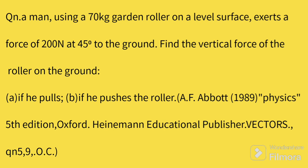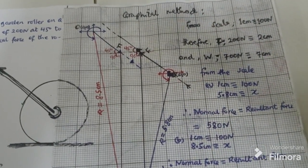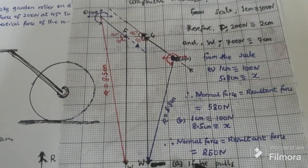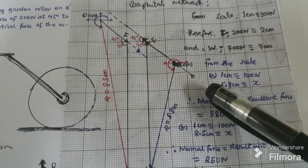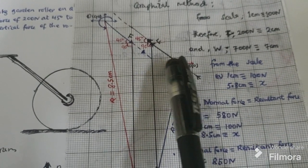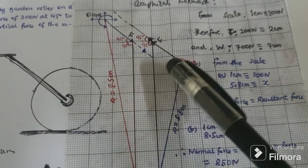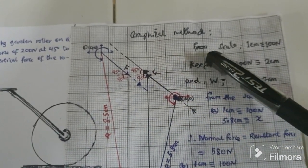Let us consider these questions by a first method, that is the graphical method. Part A is when he pulls. We know that the force will be moving up at a certain angle which is 45 degrees with horizontal. In order to have a vector diagram here, we must have a scale.